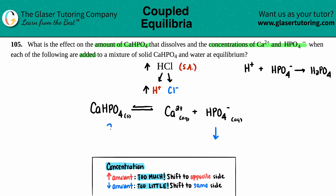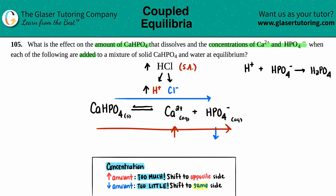So we've answered one part: there is a drop in HPO4²⁻. Now what happens to CaHPO4 and Ca2+? This comes from Le Chatelier's principle. We are decreasing an amount on the product side — we have too little, so the equilibrium has to shift toward the products to get it back. As it shifts toward the products, Ca2+ will also increase. And since we're breaking down more CaHPO4 to do this, CaHPO4 will decrease. So: CaHPO4 decreases, Ca2+ increases, and HPO4²⁻ decreases.